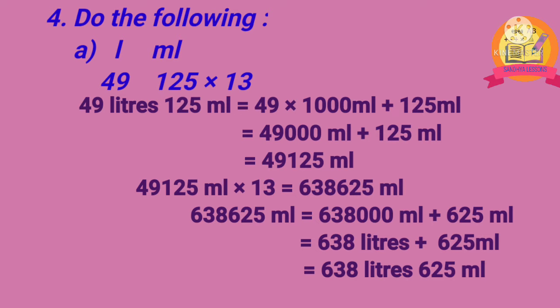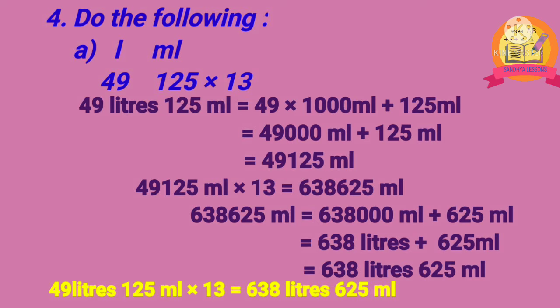Fourth problem: do the following multiplications. Problem A: multiply 49 liters 125 milliliters with 13. First, convert 49 liters 125 milliliters into milliliters, giving 49,125 milliliters. After multiplying 49,125 milliliters by 13, we get 638,625 milliliters. By converting 638,625 ml into liters, we get 638 liters 625 ml. Therefore, 49 liters 125 ml multiplied by 13 equals 638 liters 625 ml.